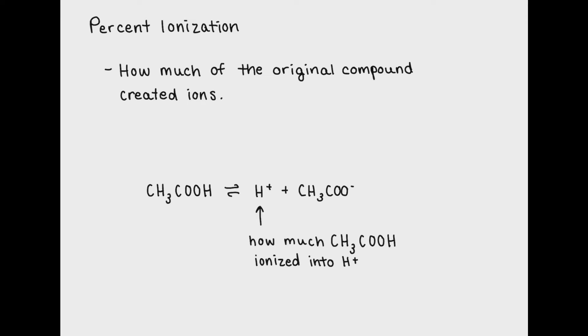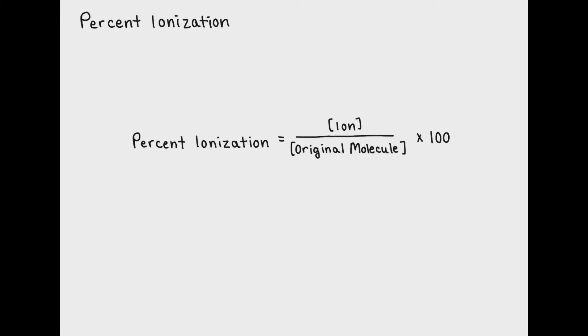To find percent ionization, all you have to do is divide the concentration of the ion of interest by the original concentration of your reactant and multiply by 100. This is essentially a ratio of the ion concentration to the molecule concentration given as a percentage.